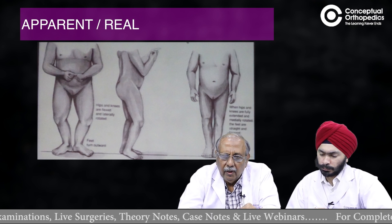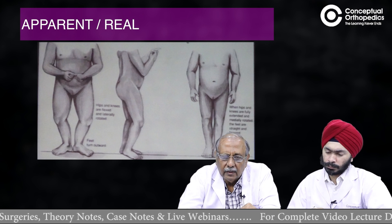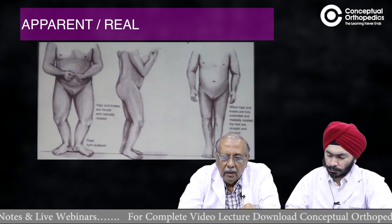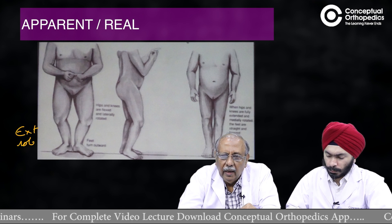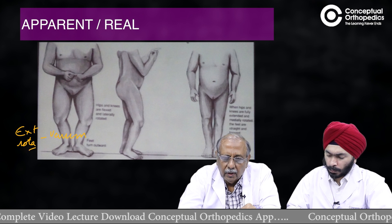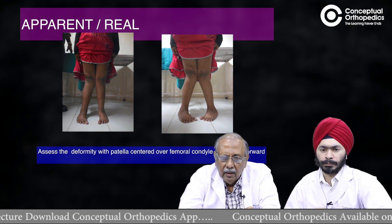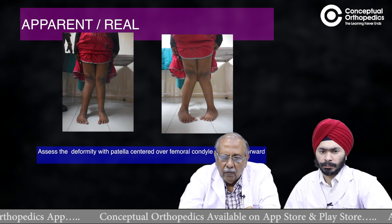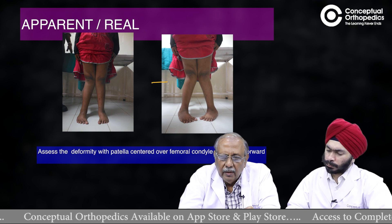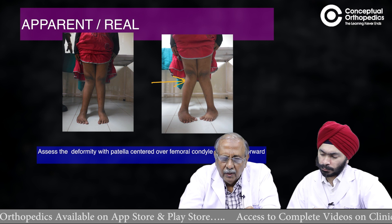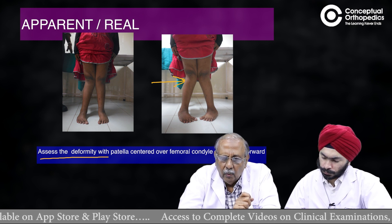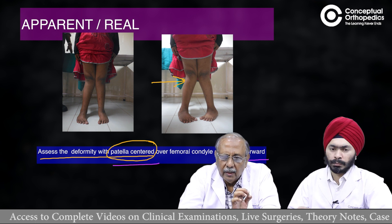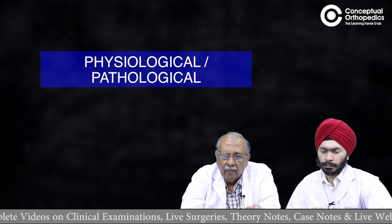Regarding real versus apparent deformity — when you keep your limbs externally rotated and flex the knee, a genuvarum deformity appears. Conversely, internal rotation with knee flexion produces a genuvalgum deformity. This is evident in this girl who has a mild genuvalgum deformity: on flexing the knee and internally rotating the leg, the genuvalgum deformity increases significantly. Always assess deformity with the patella centered over the femoral condyle and facing forwards.